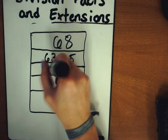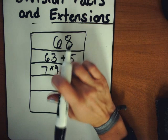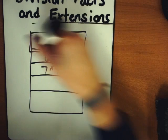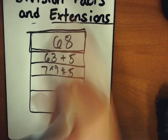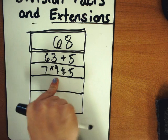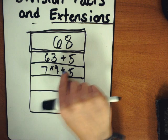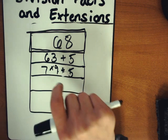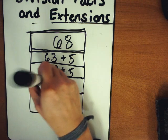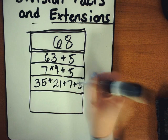So I know 7 times 9 plus 5 is also equal to 68. But I wrote it this way because 9 is a multiple of 3. I could also think about breaking 68 into some other friendly numbers using multiples as my number.